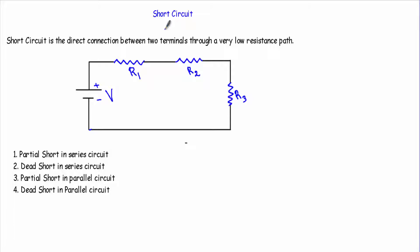In this video I will talk about short circuit. I will show you different kinds of short circuit and after that I will show you an example of a circuit in which I have to calculate the total current when a short circuit occurs. A short circuit is the direct connection between two terminals through a very low resistance path — that means connecting any two points in a circuit through a very low resistance path. Usually we assume that the resistance of that low resistance path is equal to zero.